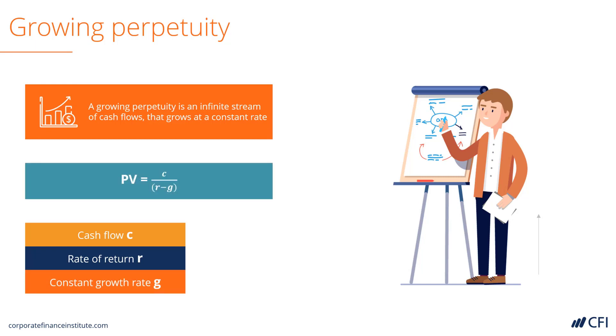The present value is the first payment we received one year from today divided by the discount rate minus the constant growth rate.